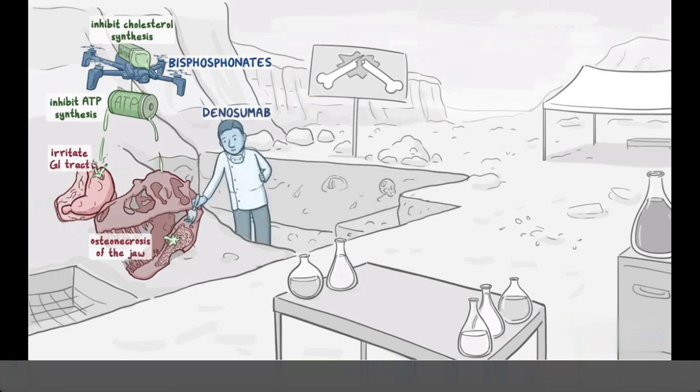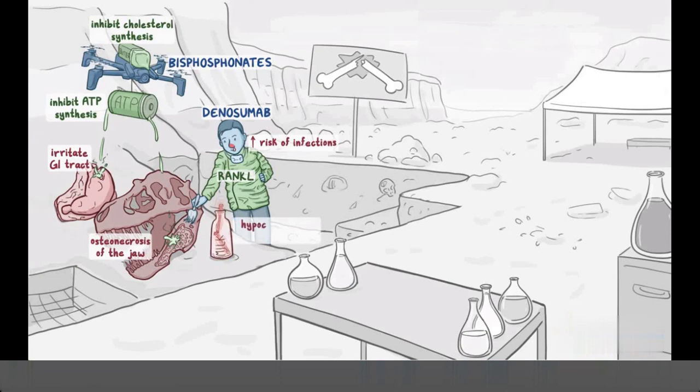Next we have denosumab, which will be represented by a dentist working on the fossil. He's wearing a very wrinkly shirt to help you remember that it targets RANK-L. For side effects, let's have him working on the damaged jawbone since it also causes jaw osteonecrosis. He also has a runny nose which represents the increased risk for infections. Next to him there's an empty milk bottle for hypocalcemia, and inside there's a broken phosphorescent glow stick for hypophosphatemia.